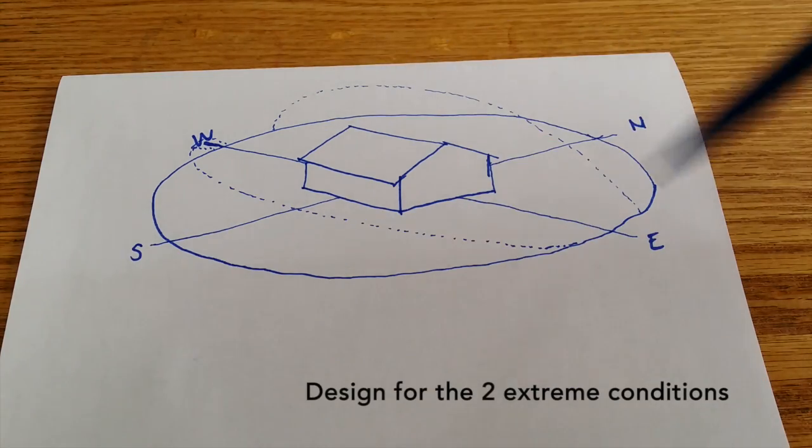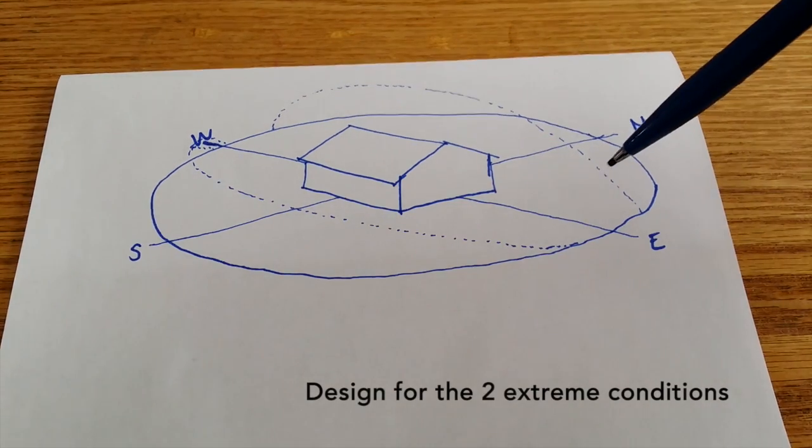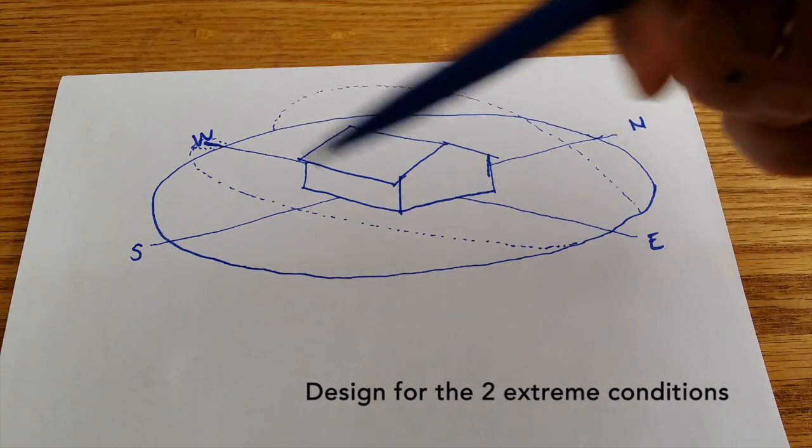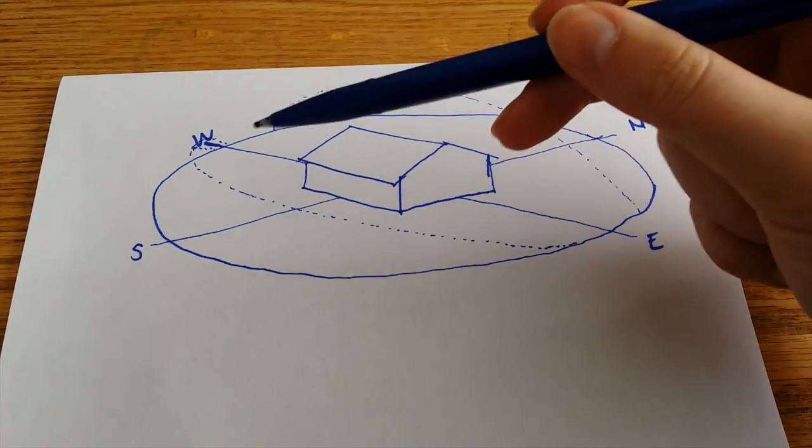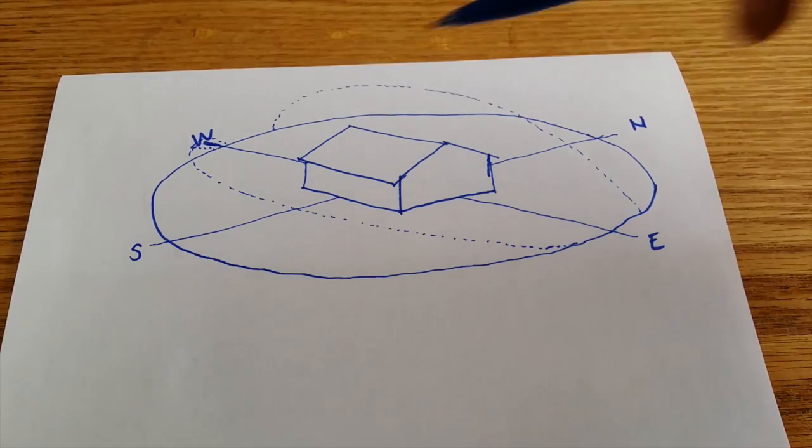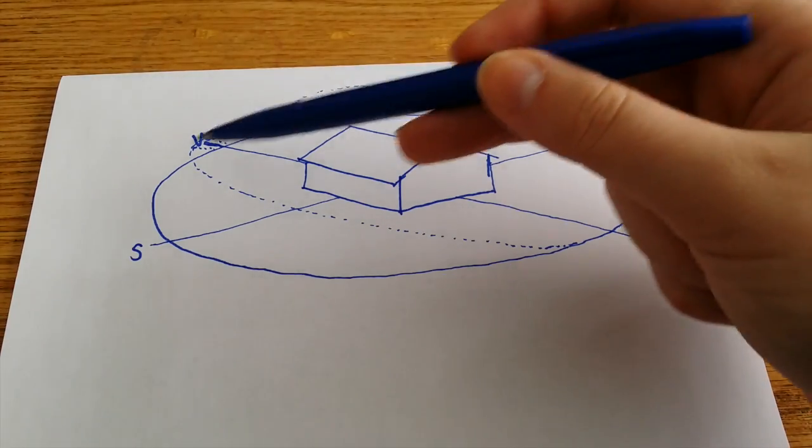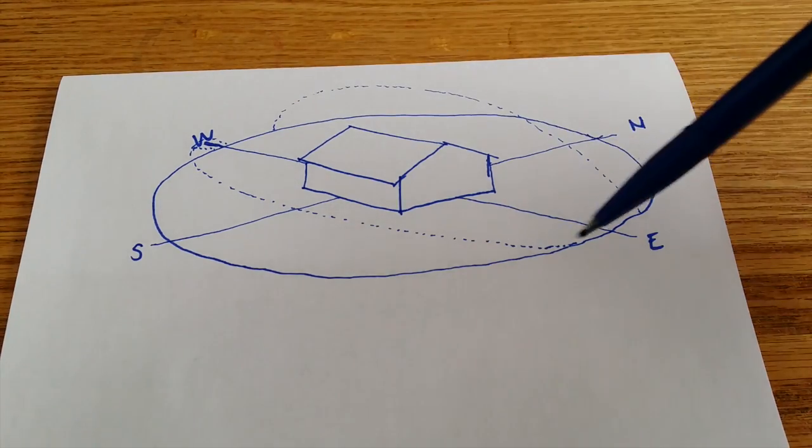Here we have drawn the summer sun path as well as the winter sun path. You can see here that the summer sun is much higher in the sky whereas the winter sun is much lower.